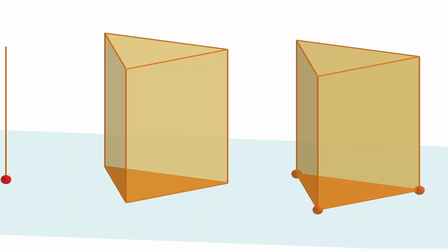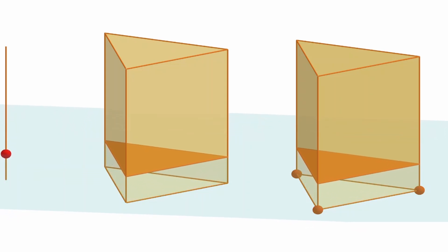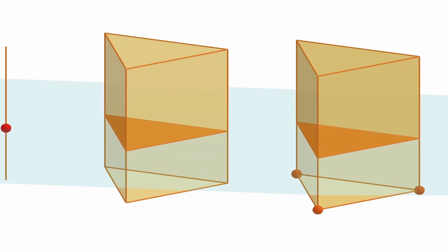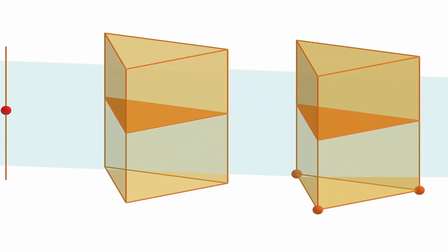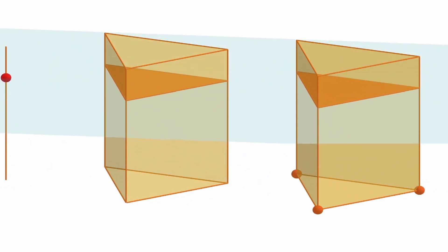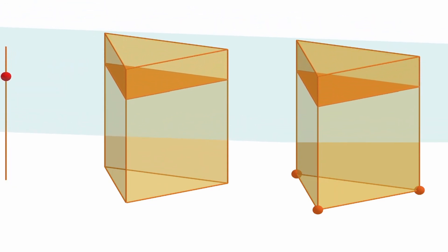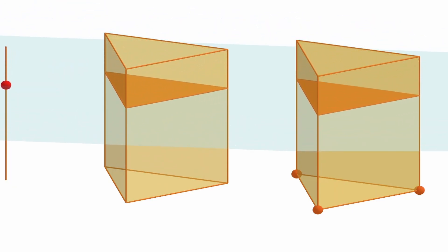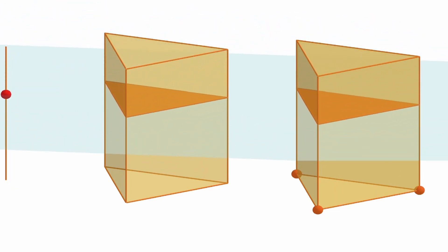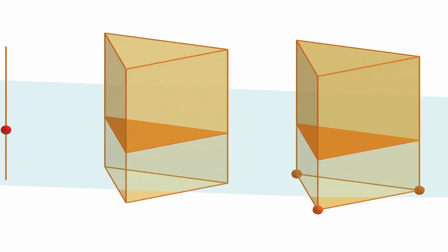And in addition, notice that when we move this blue plane, the intersection that we have on the prism on the left is the same as the intersection that we have on the prism on the right. They have the same intersection at the same height, but they both have the same volume.